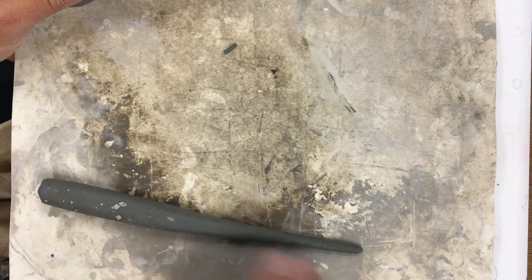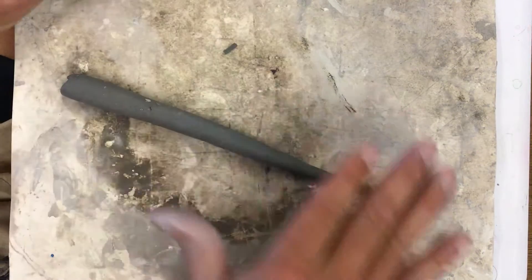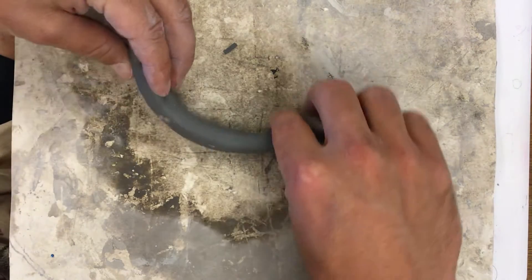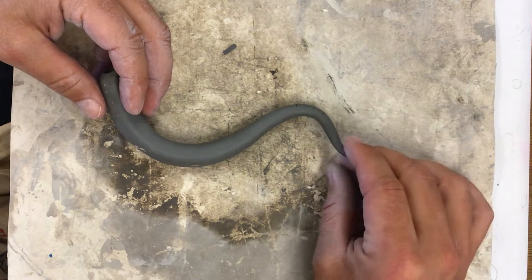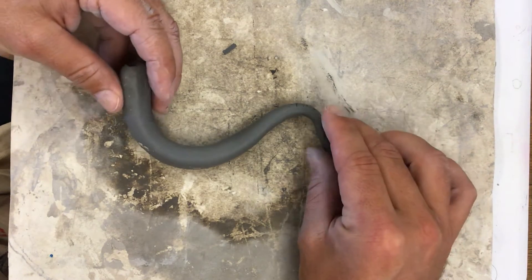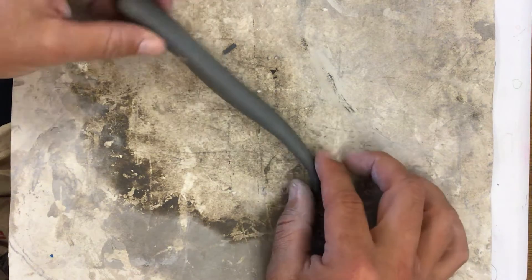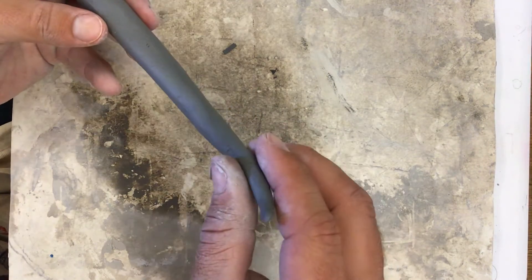Heavier pressure here gives me that skinnier end. Lighter pressure at the top gives me a fatter coil. So if you notice, this is if I wanted to do a tail, you could have like a nice tail that tapers down in size. You can use your fingers to make that more of an even point. That could be the tail of an animal or a worm or a snake. But this end is definitely fatter and this end is definitely skinnier.